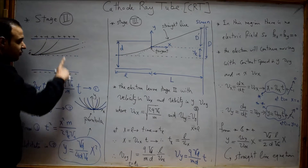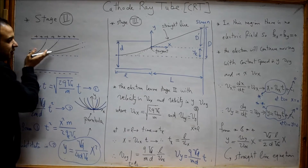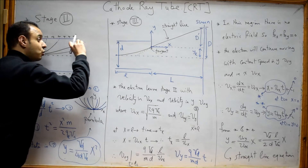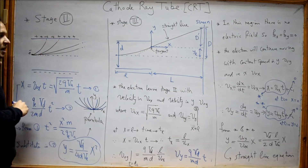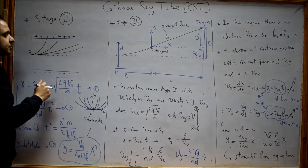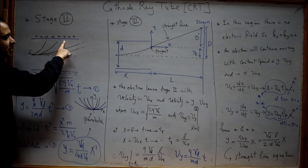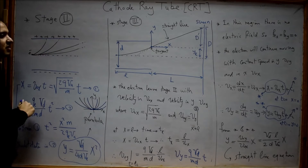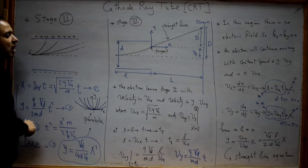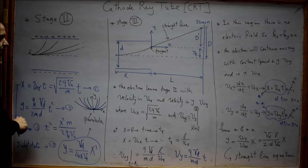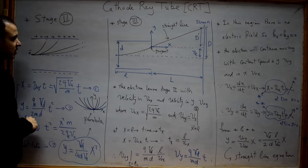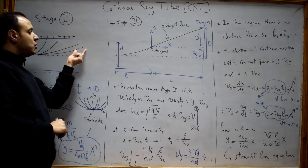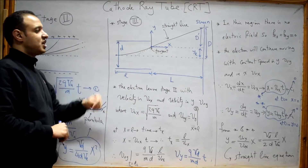According to the value of the deflection voltage, the parabola may take different forms. In two of these cases, the electron will successfully leave the deflection plates and travel toward the screen. But if the deflection voltage is too high, the electron may hit the deflection plates and never exit.